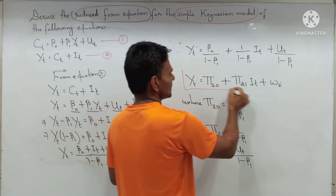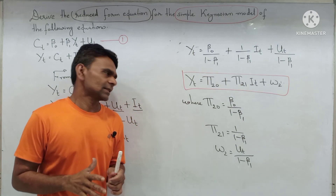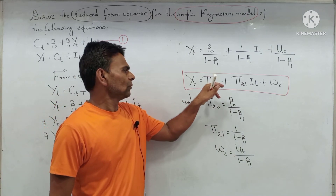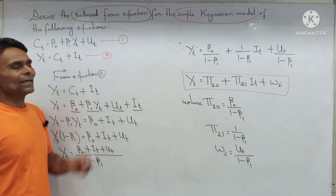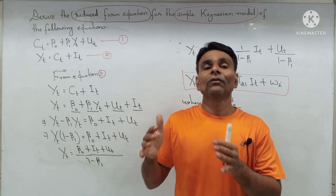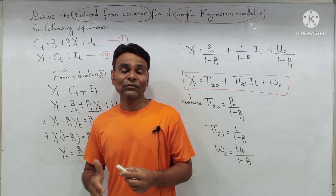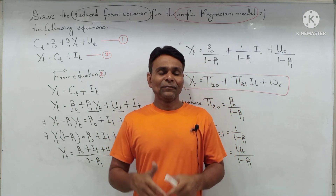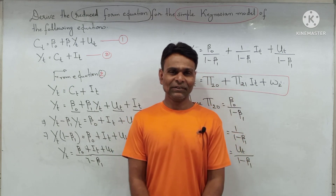This is the reduced form equation of the income function. Using the OLS method, we can easily estimate the parameters pi20 and pi21. Note that if we directly apply OLS on the original two simultaneous equations, the results obtained would be biased and inconsistent. I hope you have understood how to derive the reduced form equation from a simultaneous equation model. Please like and share as much as you can — thanks for watching!